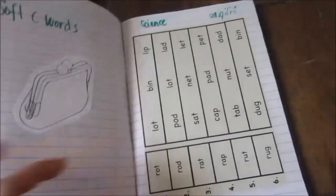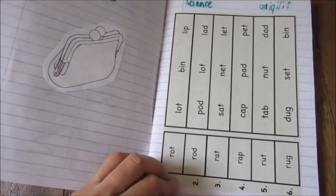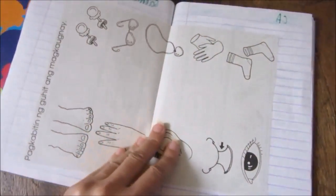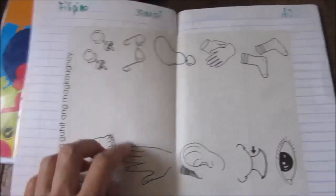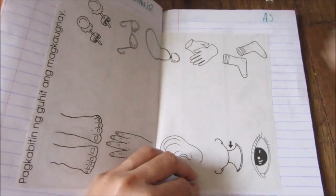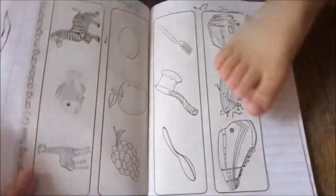And then for science, just rhyming, more rhyming. And for Filipino, things that go together or magkaugnay. Mga bagay na magkaugnay.